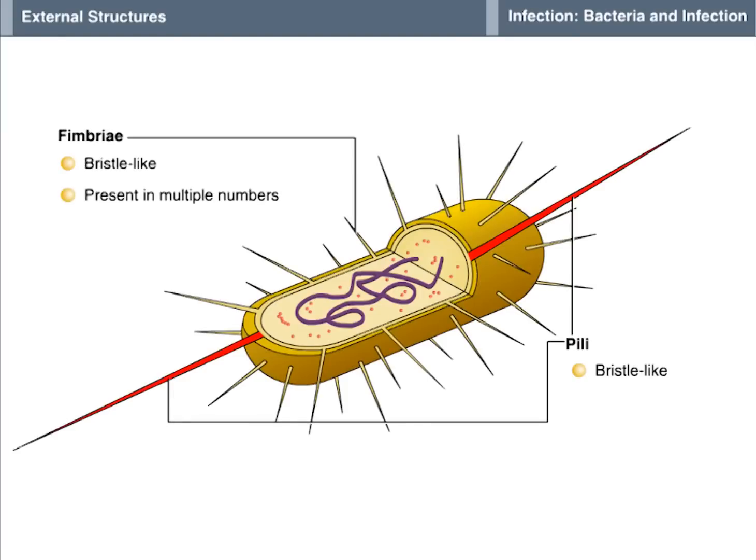Fimbriae are present in multiple numbers and are found either at each end of the cell or distributed evenly over the entire cell surface. Like the bristles on a burr, fimbriae help the bacterium adhere to tissue surfaces within the host.